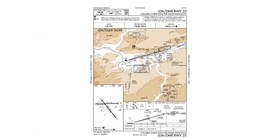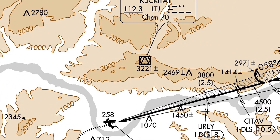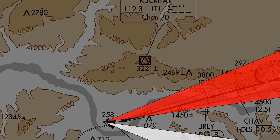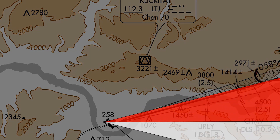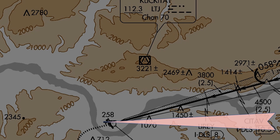Here's an approach into The Dalles, Oregon. This is an example of an LDA approach, or localizer-type directional aid. AIM 1-1-9C says an LDA is of comparable use and accuracy to a localizer, but isn't part of a complete ILS. On a typical localizer approach, the broadcast signals would start from the back of the runway and converge along the extended centerline like on an ILS, and the localizer feather symbol would be used to express the approach course.